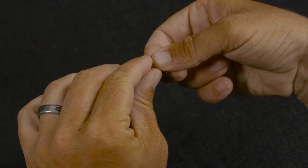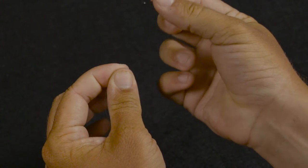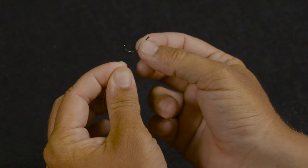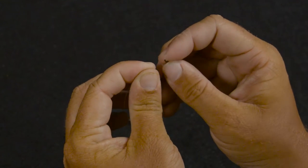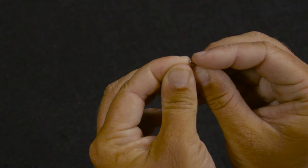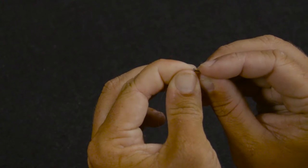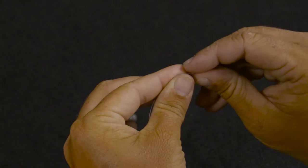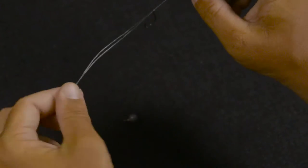So double that line over again to tie a Palomar knot. This is a little size number one split shot drop shot hook. It's a small hook and it's designed to just pierce the fish right in the meat of their mouth. So I'm going to pinch that down, pass it through the eye, and tie my Palomar knot.